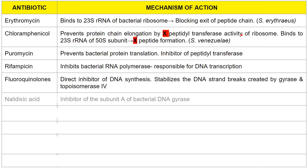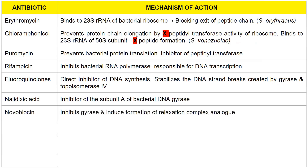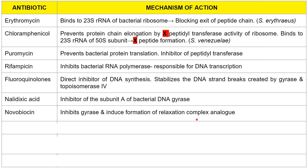Next we have nalidixic acid, which is an inhibitor of subunit A of the bacterial DNA gyrase. Next we have novobiocin, also an inhibitor of gyrase, and it induces formation of a relaxation complex analog. Then we have cycloheximide, which binds to the ribosome and specifically inhibits the elongation factor EF2 in the protein synthesis step, thereby inhibiting translation elongation.